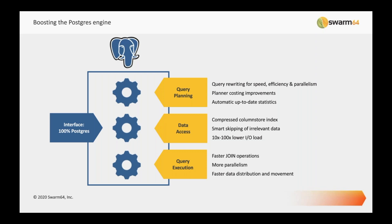The column store index is a well-established concept — perhaps the most famous one is the Microsoft SQL Server columnar index. Swarm64 has built, through Postgres's extensible indexing interface, a complete compressed column store index that is also transaction-safe. It allows you to skip irrelevant data during a query, so it reads a lot less.